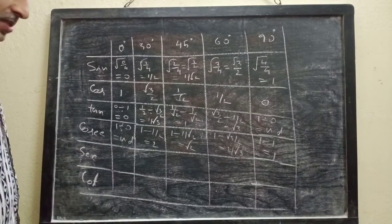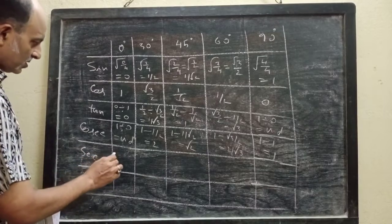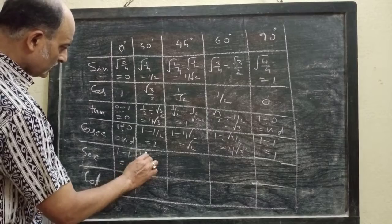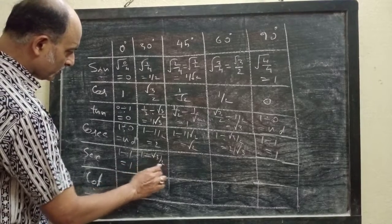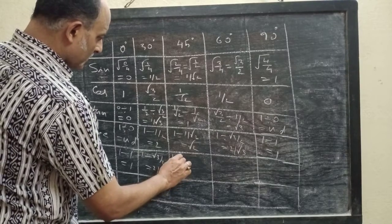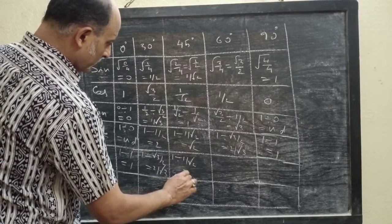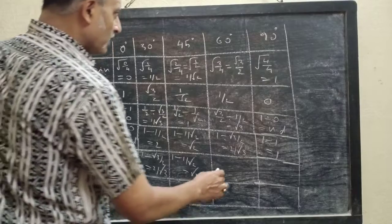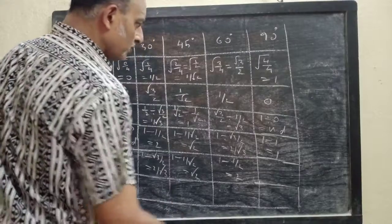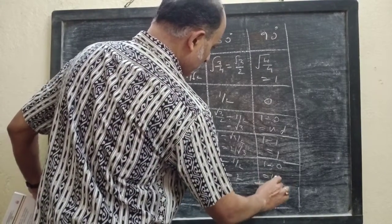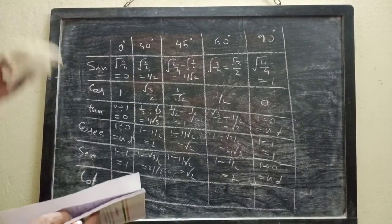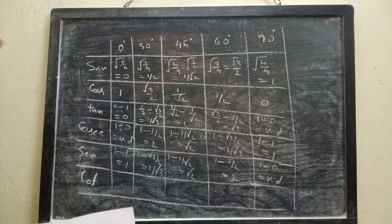Similarly, sec is the reciprocal of cos. Sec 0° = 1 ÷ 1 = 1. Sec 30° = 1 ÷ (√3/2) = 2/√3. Sec 45° = 1 ÷ (1/√2) = √2. Sec 60° = 1 ÷ (1/2) = 2. Sec 90° = 1 ÷ 0, which is undefined. So sec 90° is undefined.